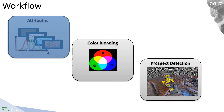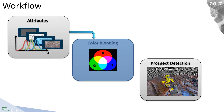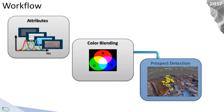Here is the workflow we are going to follow. We first need to generate the attributes based on the frequency decomposition or spectral decomposition, which generates three volumes based on three different frequencies. Then we map the three frequencies into the color blending. We can look either at the time slice of the volume or at the horizon slice if we have a horizon stack. This allows us to better track the structural features in the volume for prospect detection.